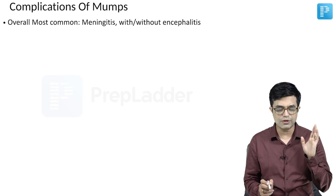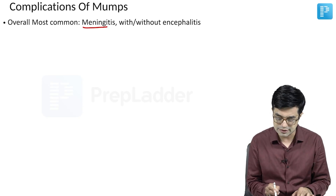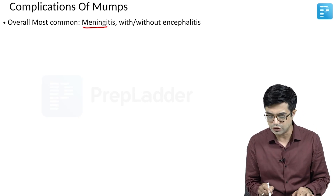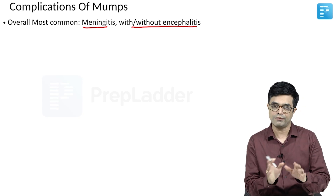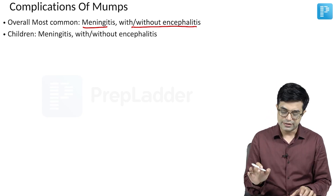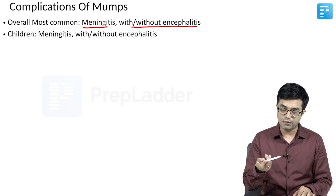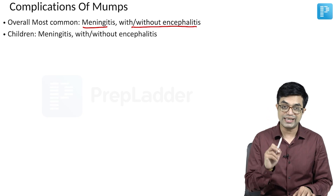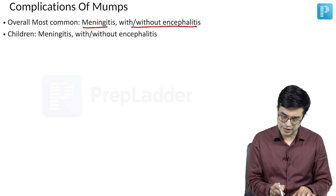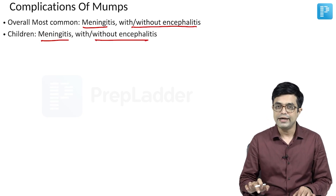First: what is the overall most common complication? It is meningitis or meningoencephalitis — it may or may not be present with encephalitis. Second: if they ask the most common complication of mumps in children, the answer is again the same — meningitis or meningoencephalitis.